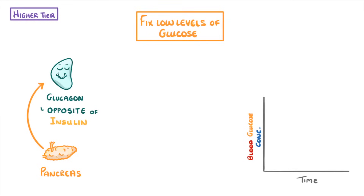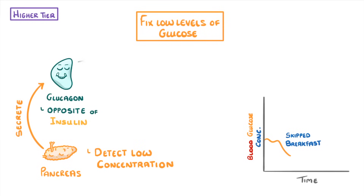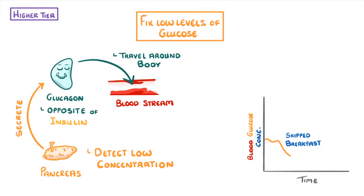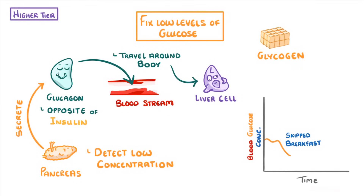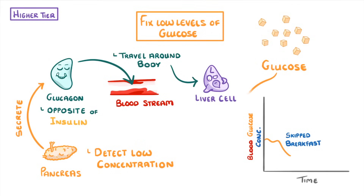If we look at our graph again and imagine that our blood glucose levels drop too low — for example because we skipped breakfast and have been rushing about all morning — then our pancreas would detect this low concentration of blood glucose and secrete glucagon into the bloodstream. As the glucagon travels around the body, it would bind to lots of different cells, but mainly liver cells, which would take that glycogen we mentioned earlier and break it down into lots of glucose molecules again, then release these glucose molecules into the blood. This would bring the blood glucose concentration back up to normal, so that all of our cells have a good supply of it for respiration.